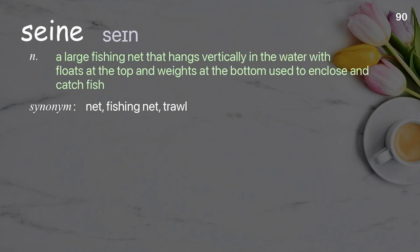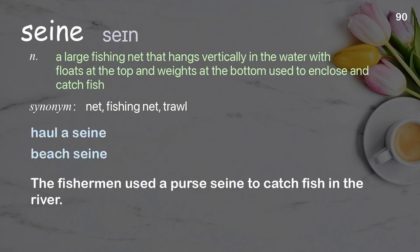Seine: a large fishing net that hangs vertically in the water, with floats at the top and weights at the bottom, used to enclose and catch fish. Examples: Haul seine. Beach seine. The fishermen used a purse seine to catch fish in the river.